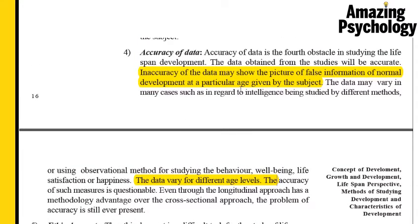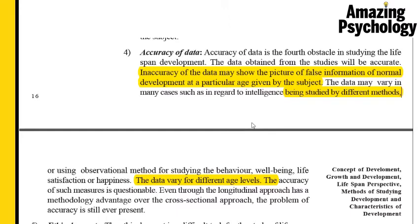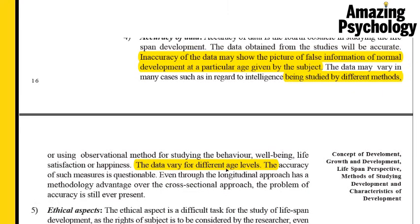Not only does data vary because of false information, it also varies because of the different methods used to study it. Results from one method may be completely different from results using another method — for instance, studying intelligence with one method versus an observational method yields very different results. So there are three ways data can vary: first, if a person provides false information; second, depending on the research method used; and third, data will vary for different age levels — a five-year-old's data will not match a 10-, 15-, or 20-year-old's data.